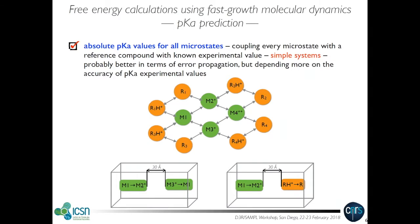We can also consider a more direct approach applicable for simple systems: instead of calculating relative pKa values, we can directly calculate absolute values for all microstates if we have sufficient reference compounds. This is probably better in terms of error propagation but relies on the availability of experimental values for those compounds. We applied this method to three simple compounds in the SAMPL6 dataset: SM15, SM20, and SM22.